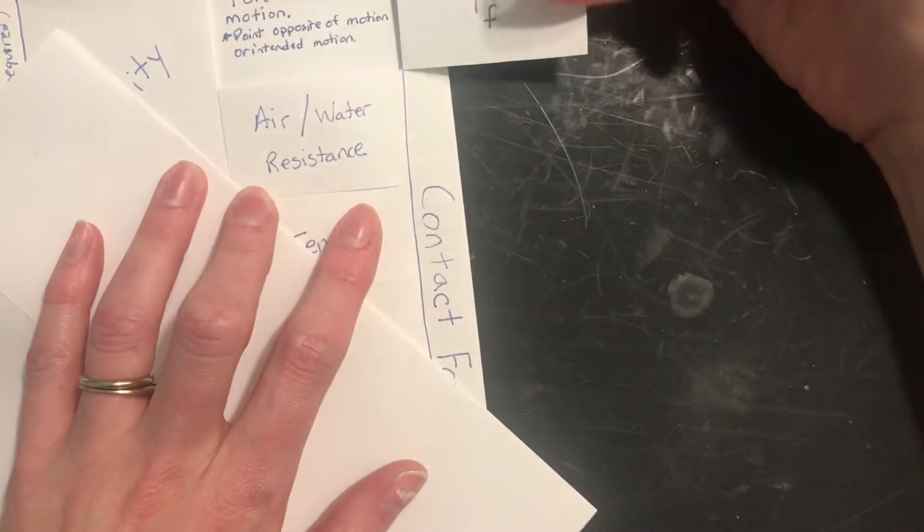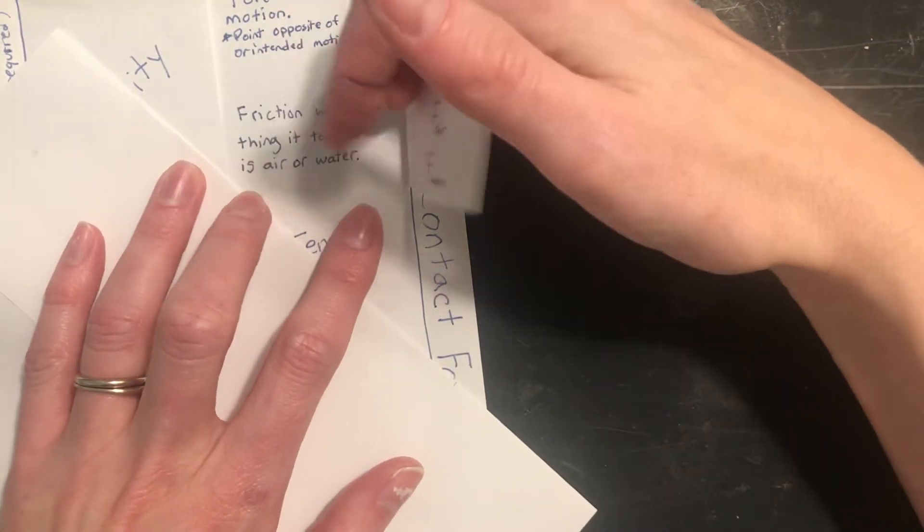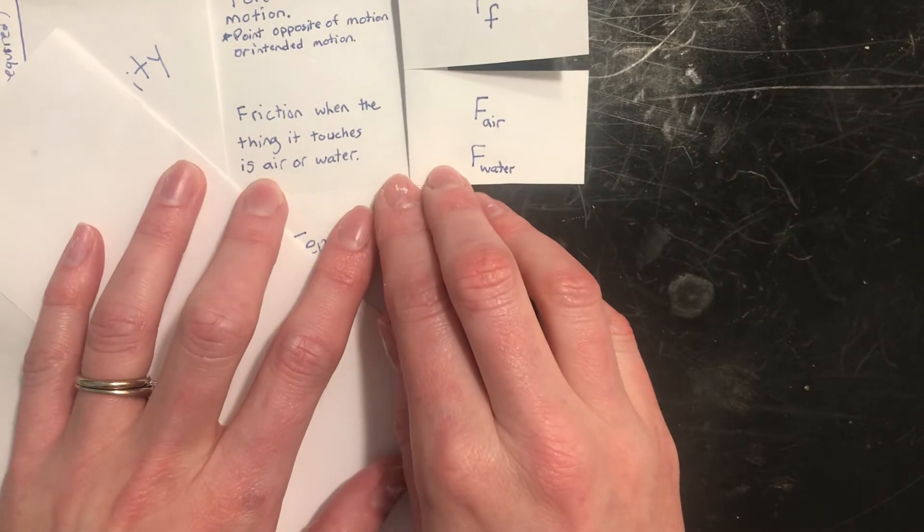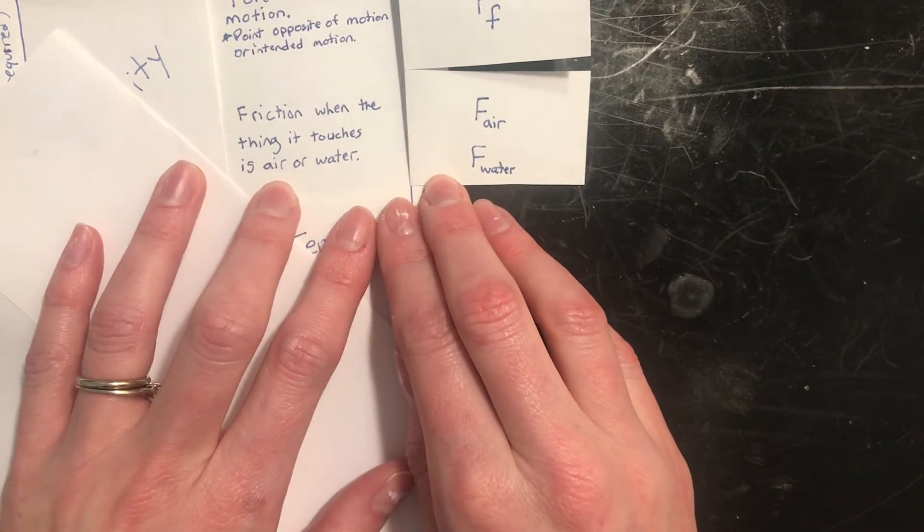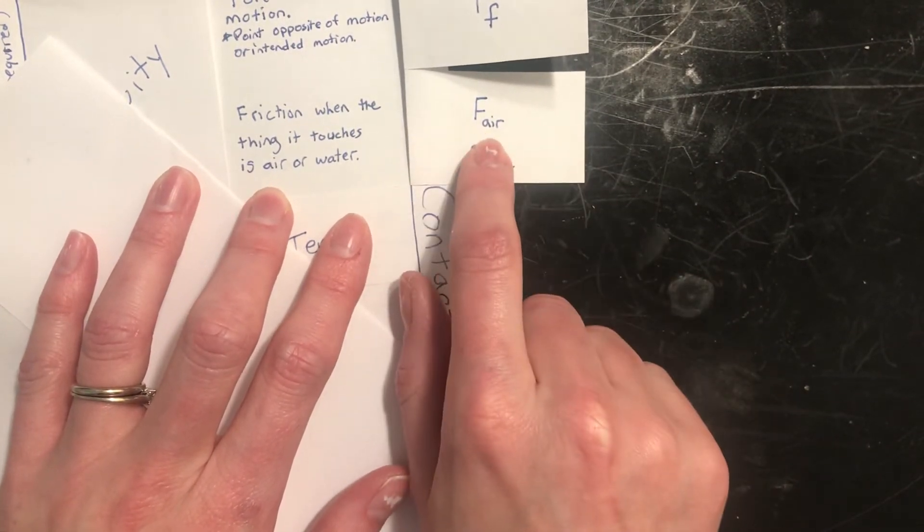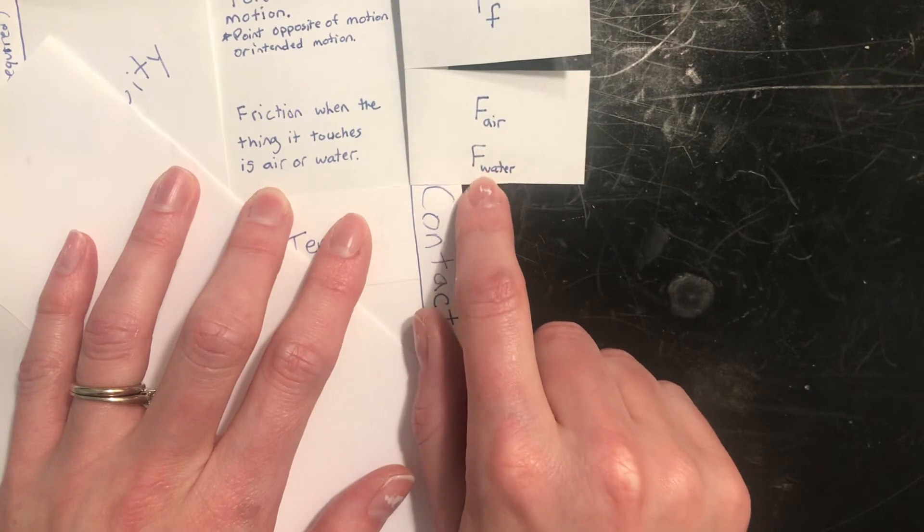The next one is another kind of friction, air and water resistance. It's really just friction if air and water is what's trying to stop you. We use F air because it's a specific friction and F water.